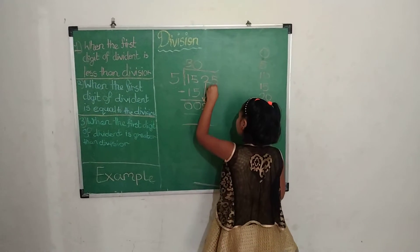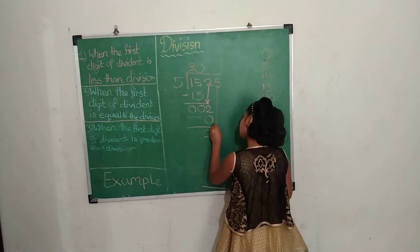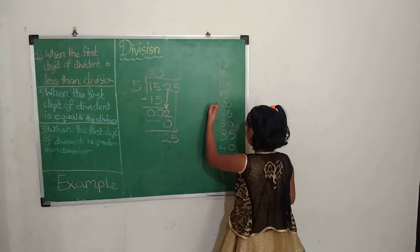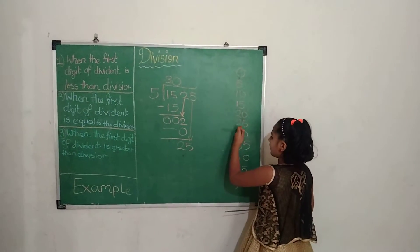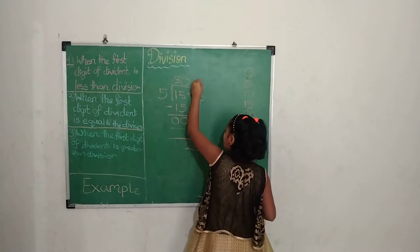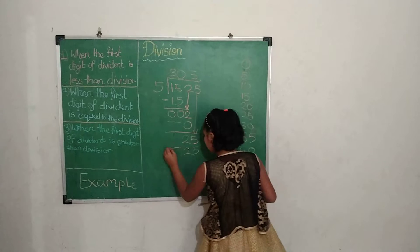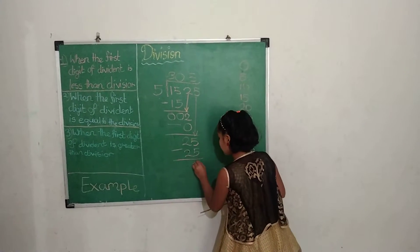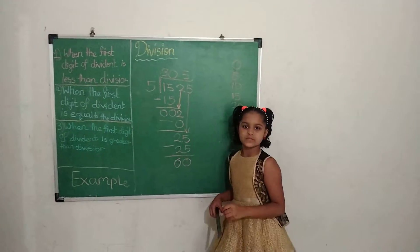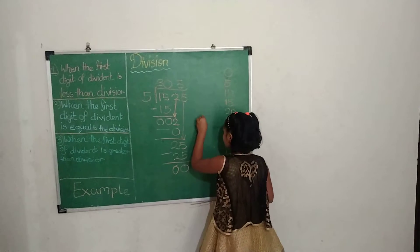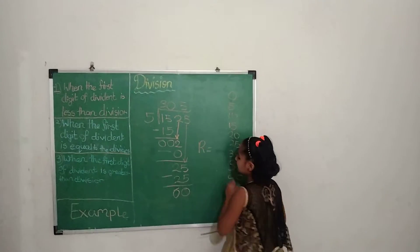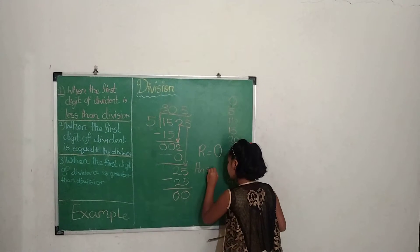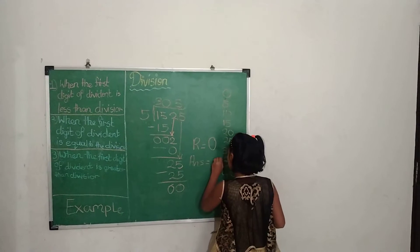Now we bring the 5 down, making it 25. In the 5's table, we see 5 fives are 25. So 5 will be written in the quotient and 25 will be written below. We subtract: 5 minus 5 equals 0, and 2 minus 2 equals 0. Our remainder is 0 and the answer is 305.